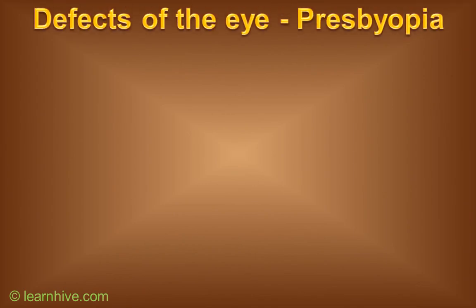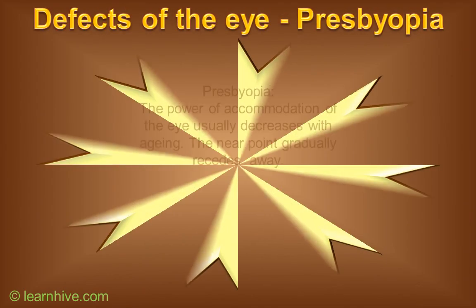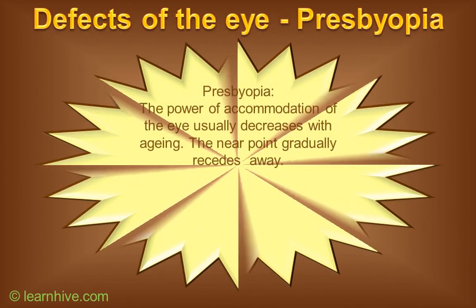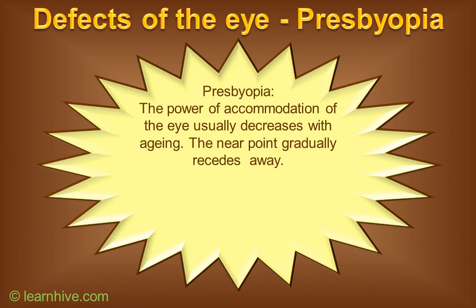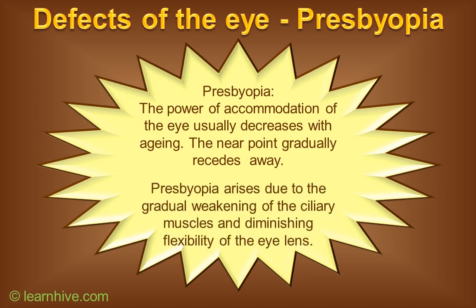Defects of the eye — presbyopia. The power of accommodation of the eye usually decreases with aging. The near point gradually recedes away. Presbyopia arises due to the gradual weakening of the ciliary muscles and diminishing flexibility of the lens.